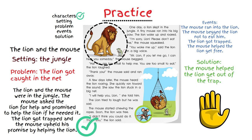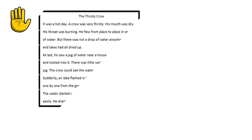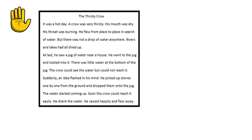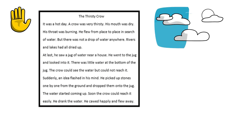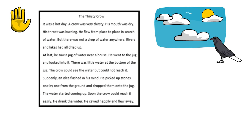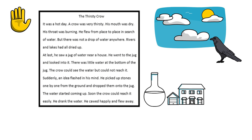I hope you're understanding how to retell a story. Let's try this process again with another story. The title of this story is called The Thirsty Crow. It was a hot day. A crow was very thirsty. His mouth was dry and his throat was burning. He flew from place to place in search of water, but there was not a drop of water anywhere. Rivers and lakes had all dried up. At last, he saw a jug of water near a house.